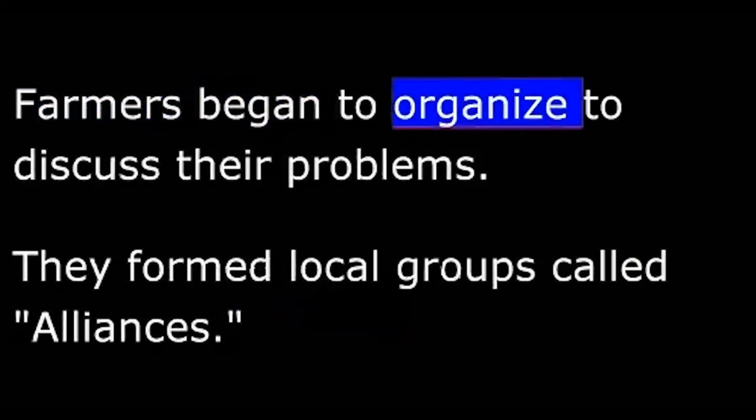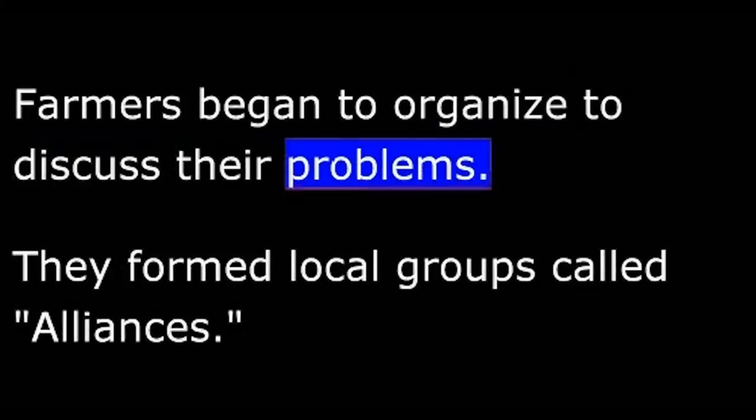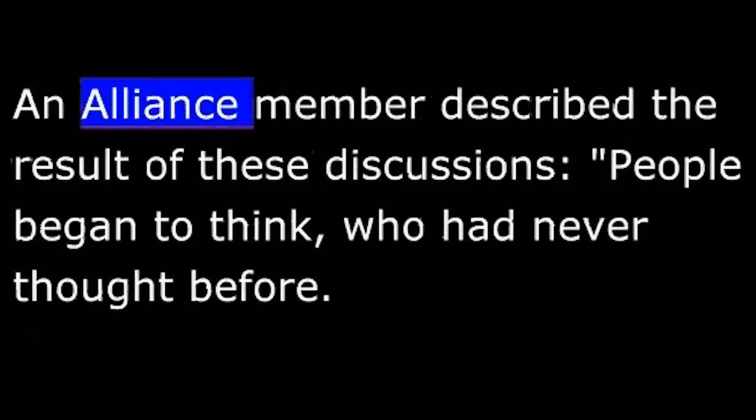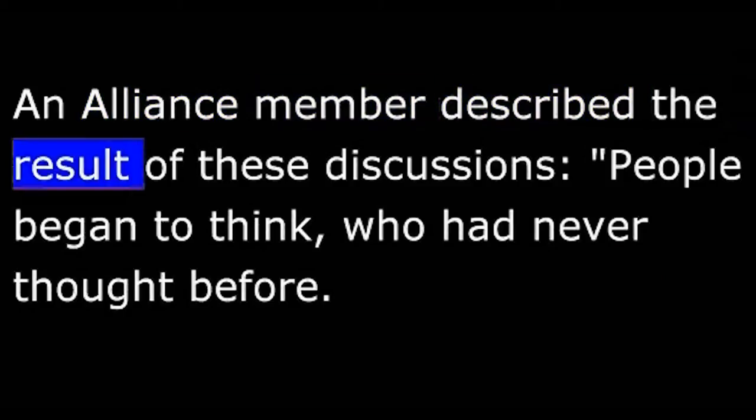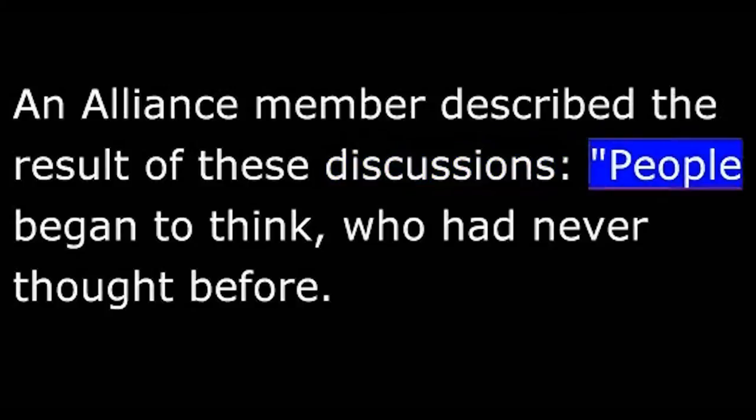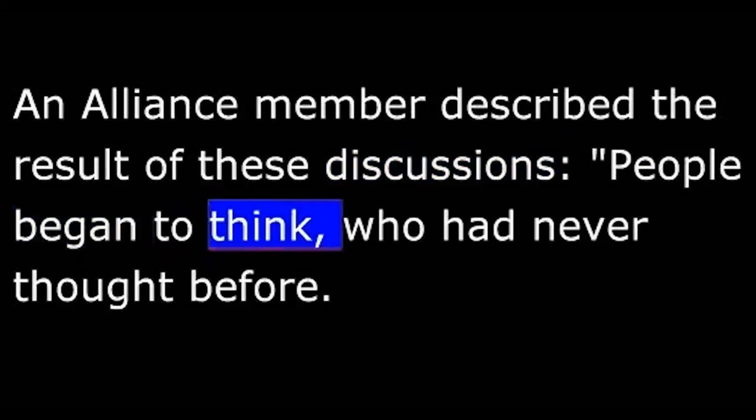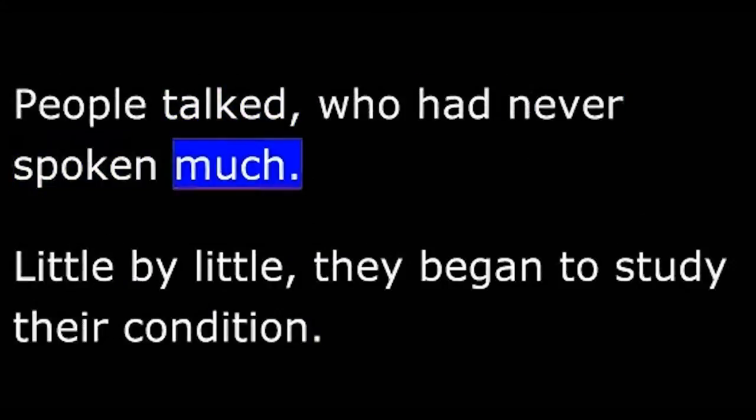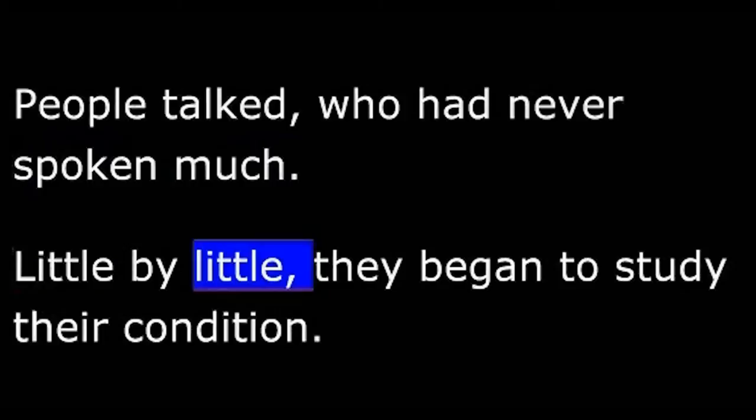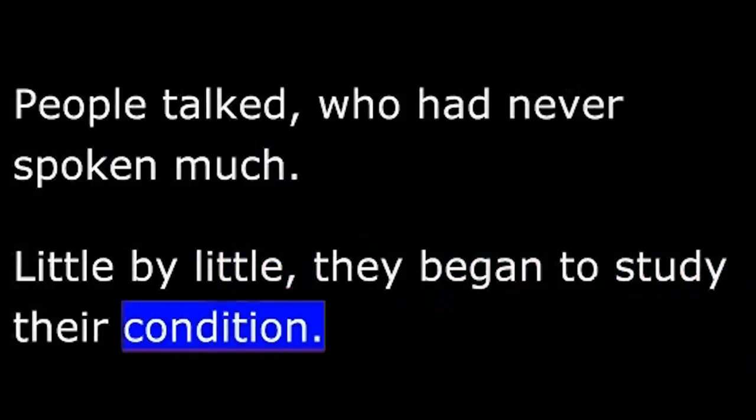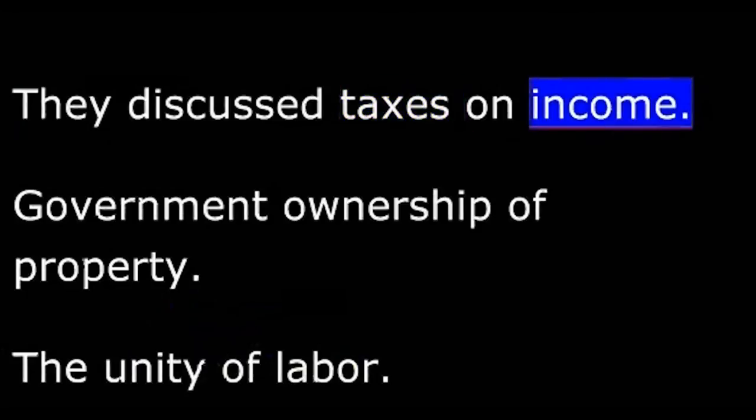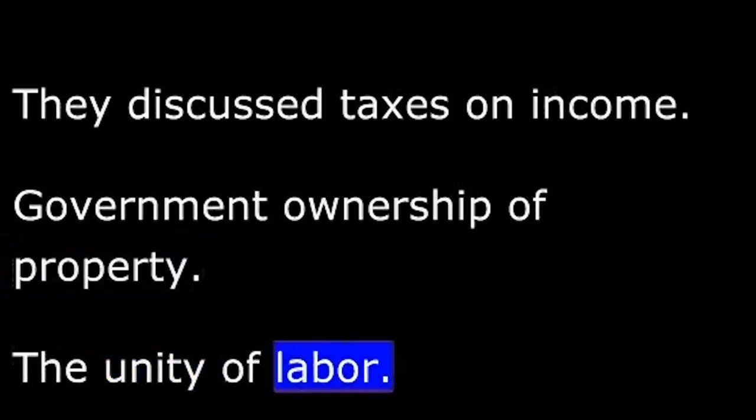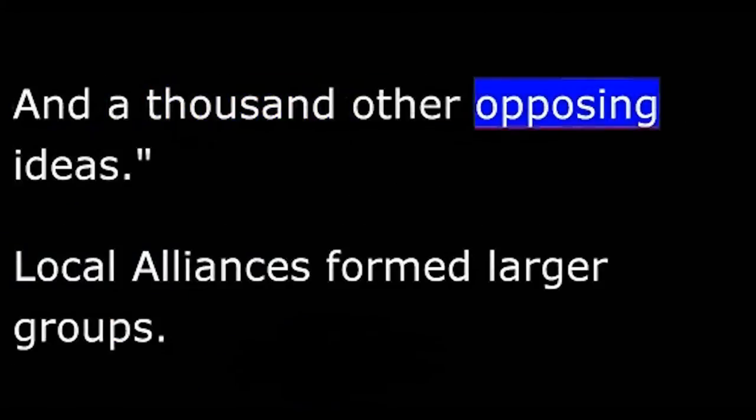Farmers began to organize to discuss their problems. They formed local groups called alliances. An alliance member described the result of these discussions. People began to think, who had never thought before. People talked, who had never spoken much. Little by little, they began to study their condition. They discussed taxes on income, government ownership of property, the unity of labor, and a thousand other opposing ideas.